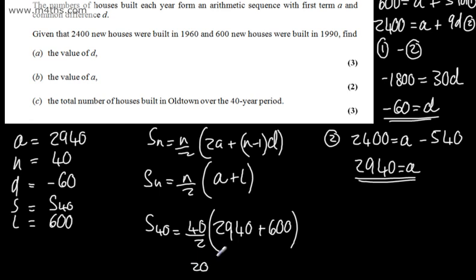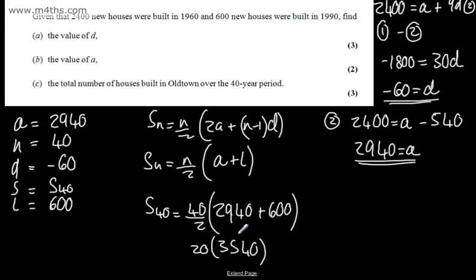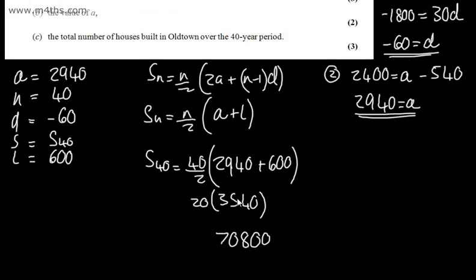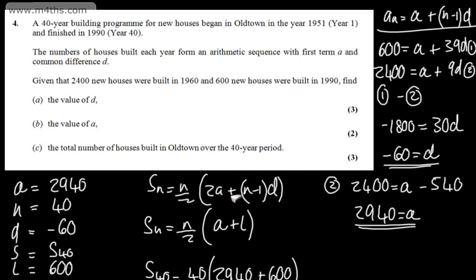If we look at this now, that's going to give me 20 lots of 3540. If we just multiply this, that's going to give me a total of 70,800. So that's our final answer, 70,800. I've used the second formula. You can use either one to find the value for all three marks.